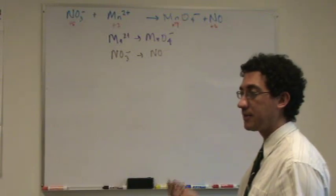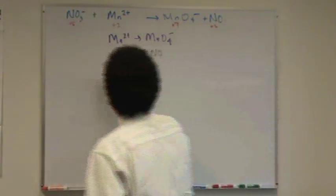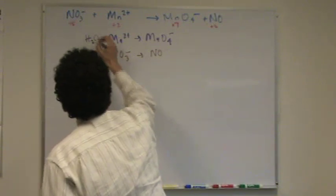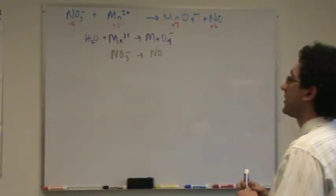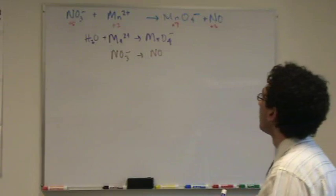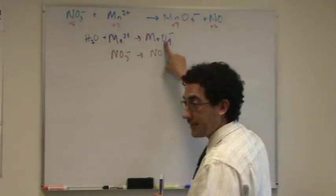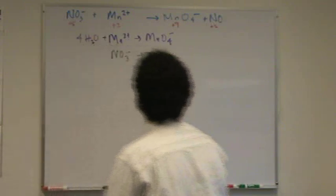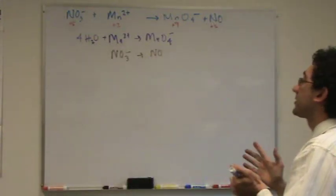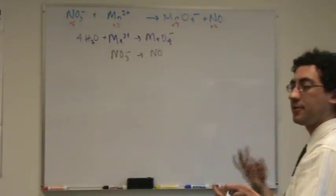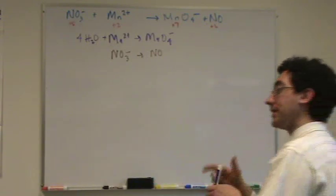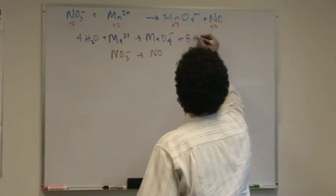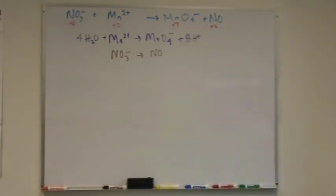Manganese is already balanced, so the second step is for oxygen. We'll put plus H2O. And how many H2Os do I need? Four, because I have four here, so I need four over here. So that looks good. Now, the third step is for hydrogen. I have eight on the left, so I need eight on the right.